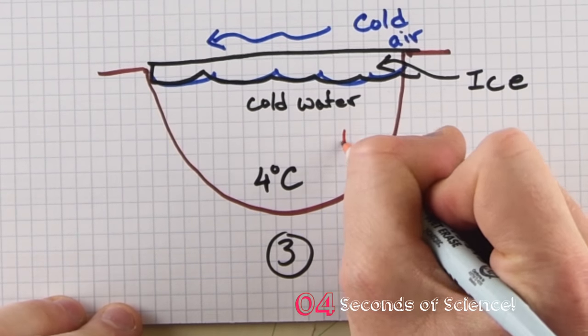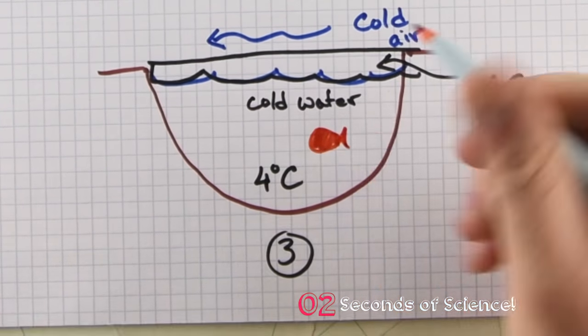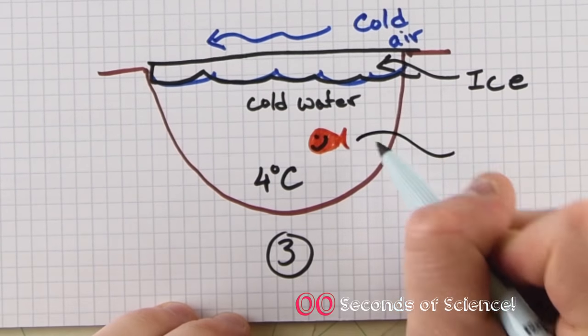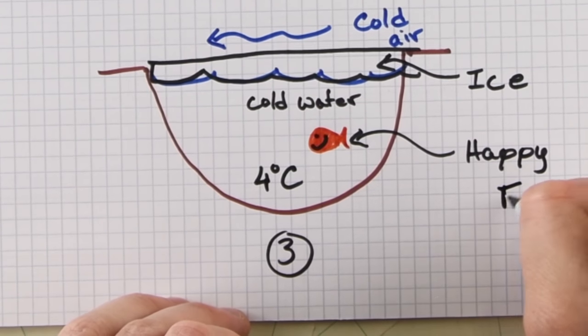The end result is a sheet of ice over the top of a lake protecting a warm pool of 4 degree water, providing the perfect home for our happy little fishy friends.